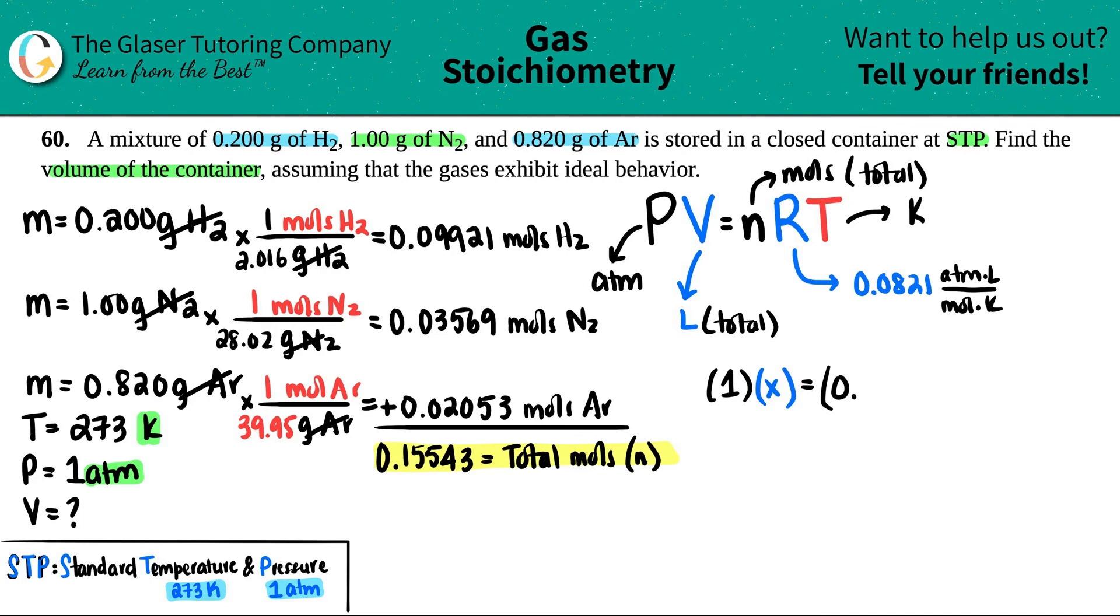So I have 0.15543 times the R value (0.0821) times the temperature value (273). Anything divided by 1 cancels out, so basically we could just forget about it.